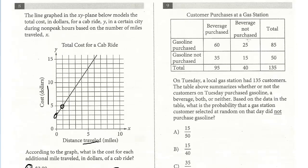Alright, let's look at question number 9. On Tuesday, a local gas station had 135 customers. The table above summarizes whether or not the customers on Tuesday purchased gasoline, a beverage, both, or neither. Based on the data in the table, what's the probability that a gas station customer selected at random on that day did not purchase gasoline?